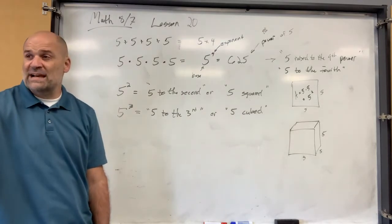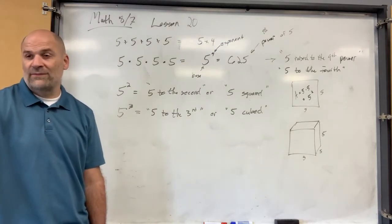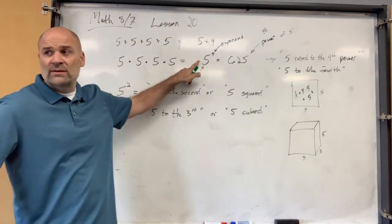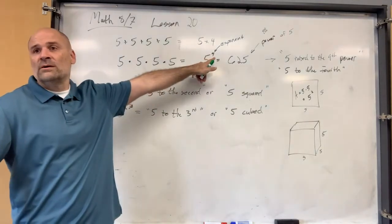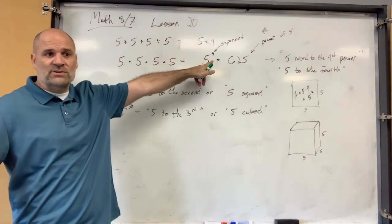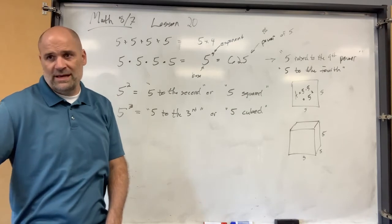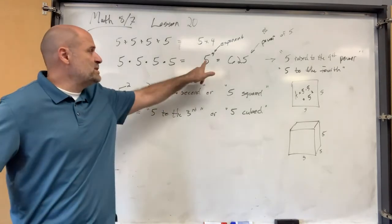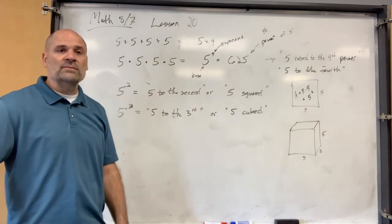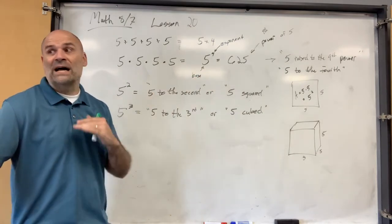Remember, when you use exponents, it gets really big really fast. Look at this — we have a cute little 5 and a cute little 4. When you put those two numbers together in an exponential expression, you get 625. That's a big number for these two cute little numbers.